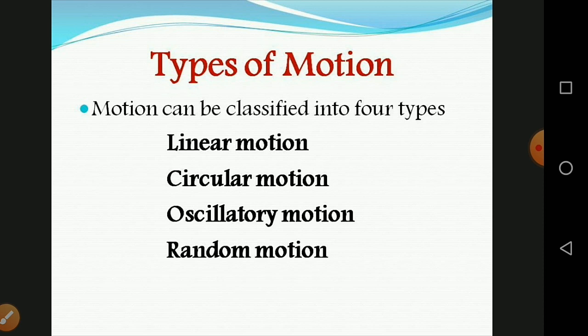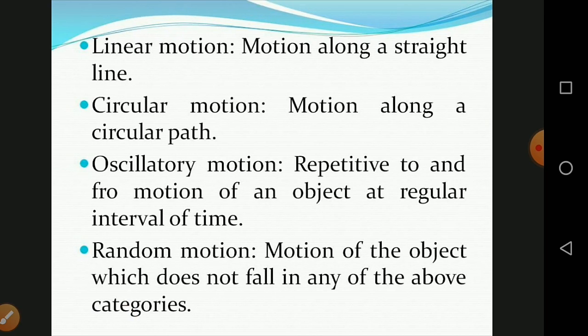Motion is classified into four types: linear, circular, oscillatory, and random. Linear motion is motion along a straight line — the path traveled is a straight line. Circular motion is motion along a circular path, like the hands of a wall clock rotating in a circular path. Oscillatory motion is the repetitive to-and-fro motion of an object at regular intervals of time — for example, a pendulum, which moves to and fro.